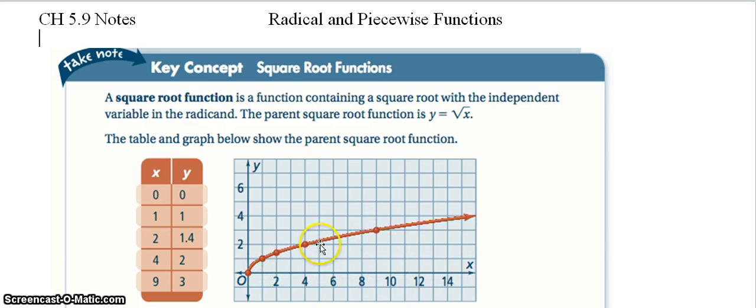But you see our line starts to kind of level out because we have to go further and further between each set of perfect squares.